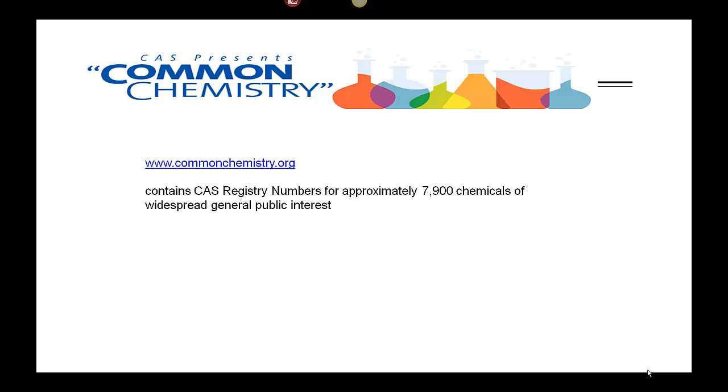The Chemical Abstract Service of the American Chemical Society provides an easy-to-use tool for looking up CAS numbers for commonly used chemicals. This is called Common Chemistry.